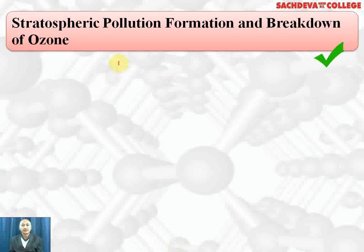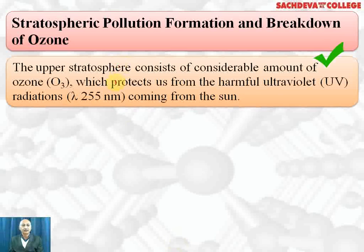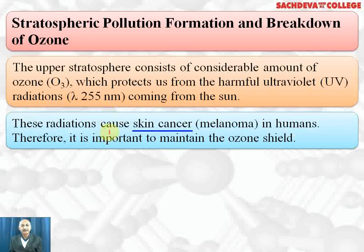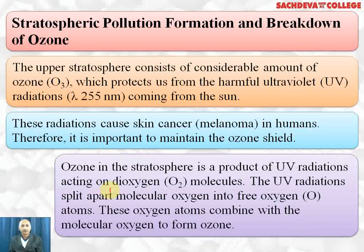Stratospheric pollution: formation and breakdown of ozone. The upper atmosphere consists of a large amount of ozone which protects us from harmful ultraviolet radiation whose wavelength is 255 nanometers coming from the sun. If it reaches the earth it may cause skin cancer — these radiations cause melanoma in human beings. Therefore it is important to maintain the ozone shield. Ozone in the stratosphere is the product of ultraviolet radiation acting on oxygen molecules and converting them into ozone.